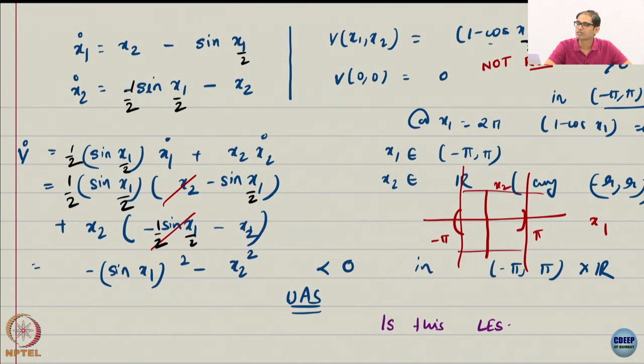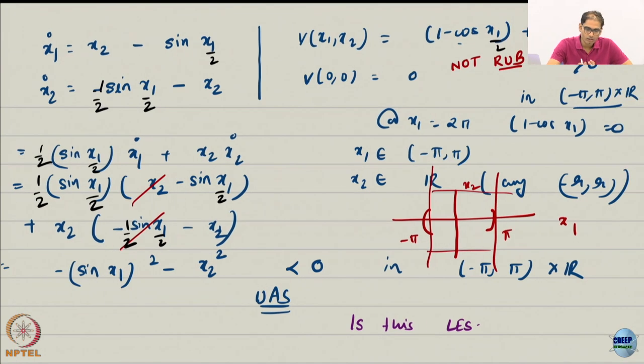Now what about positive definiteness and so on? Why is it positive definite now? What is the BR? All I need is the ball BR. What will it be? Minus 2 pi to 2 pi. How are you computing it? So you want 1 minus cos x1 by 2 to be 0. You are looking at where it is 0. So you want cos x1 by 2 to be 1. Where is that?